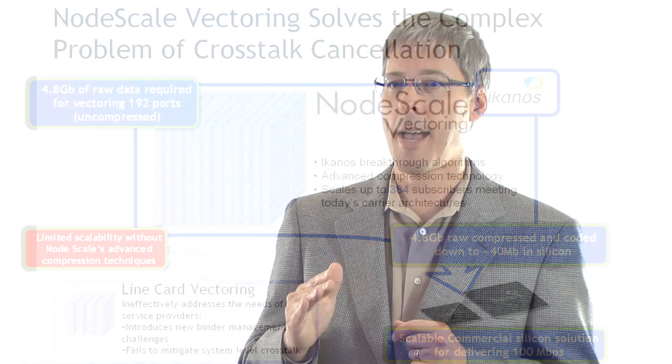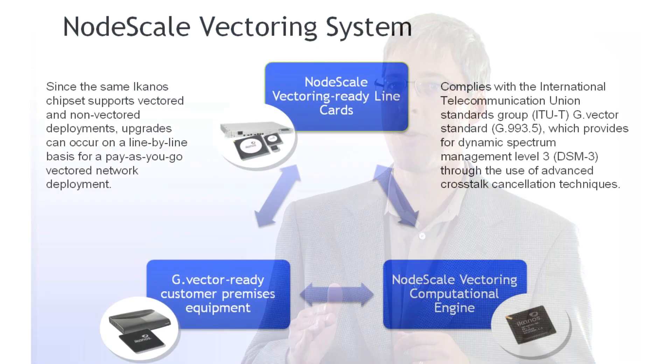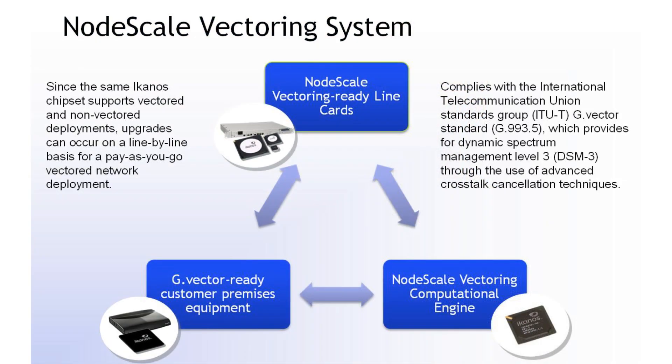The Econos solution is optimized for both retrofit applications and new chassis deployments. Since the same Econos chipset supports vectored and non-vectored deployments, upgrades can occur on a line-by-line basis for pay-as-you-go network deployments.